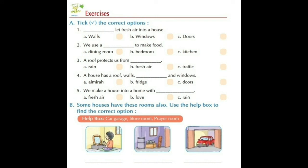Next is section B — some houses have these rooms also. Use the help box to find the correct option. The help box shows: car garage, storeroom, and prayer room. Look at the first picture — a boy is joining his hands and praying, so it is a prayer room. The next picture shows things piled up that we don't use often — that is a storeroom. The last picture shows a house with a car inside — that is a car garage.